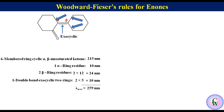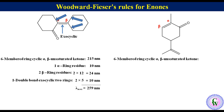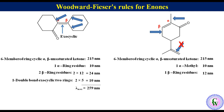Now let's take the next example. This is the alpha carbon and this is beta. The base value for a six-membered ring cyclic alpha-beta unsaturated ketone is 215 nm. There is one methyl group at the alpha position, adding 10 nm. There is one beta ring residue, adding 12 nm. The other double bond is not in conjugation with the ketone, so it is ignored. Lambda max = 215 + 10 + 12 = 237 nm.